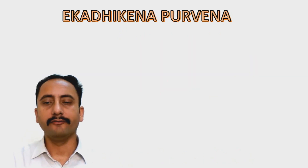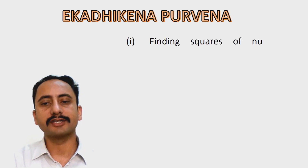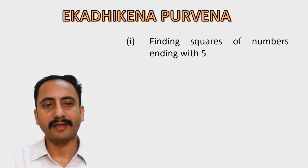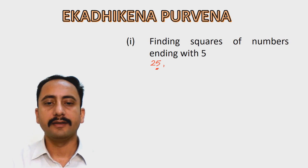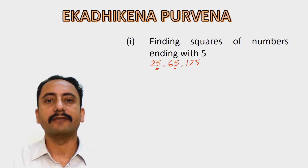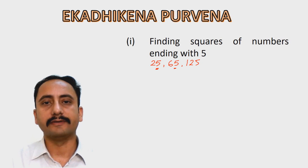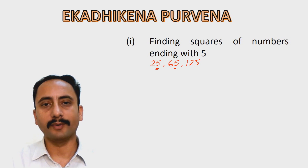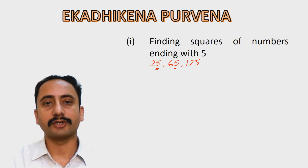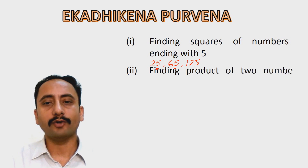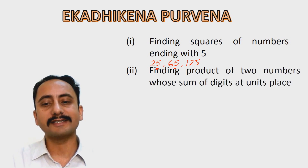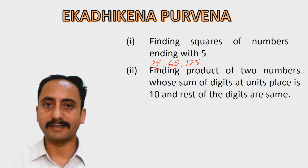Here are a few applications of Ekadhikam Purvenam. The first one is to find the squares of numbers ending with 5 — for example, 25, 65, 125. The second application is to find the product of two numbers whose sum of digits at the units place is 10 and the rest of the digits are the same.